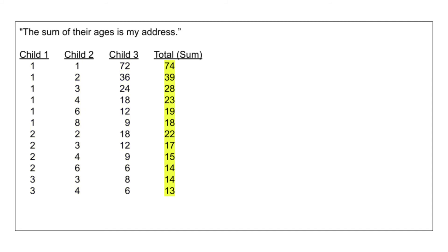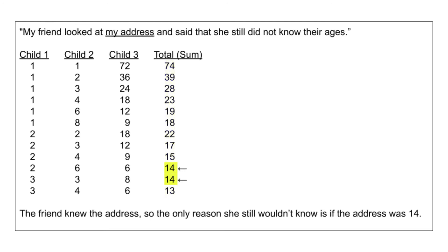The next important sentence was, the sum of their ages is my address. If we ignore the my address part of that sentence for now, what this sentence tells us is we require the sum of the ages of all 3 children, which is the last column highlighted in yellow. Then we have the sentence, my friend looked at my address and said that she still did not know their ages. Now, if my friend looked at my address, she knew what that number was, and when she looked at the number and she still didn't know their ages, that would only imply one thing, that there was two numbers that were equal, and that is the number 14.